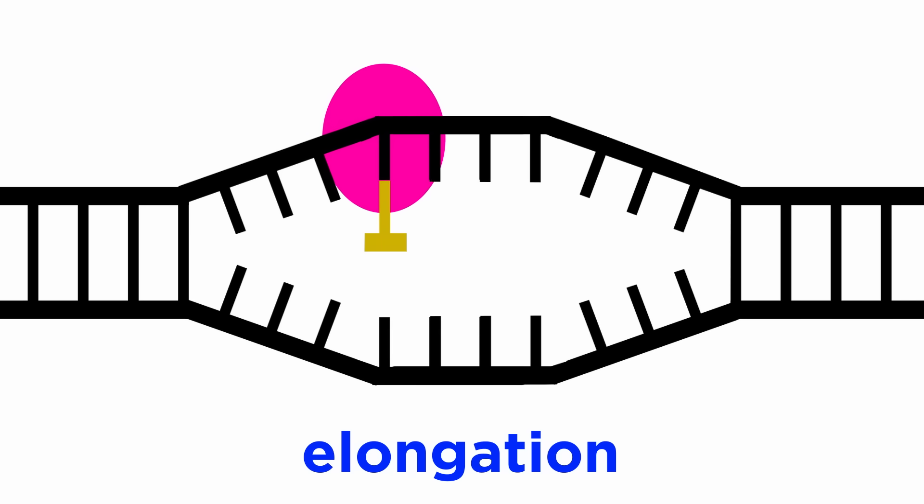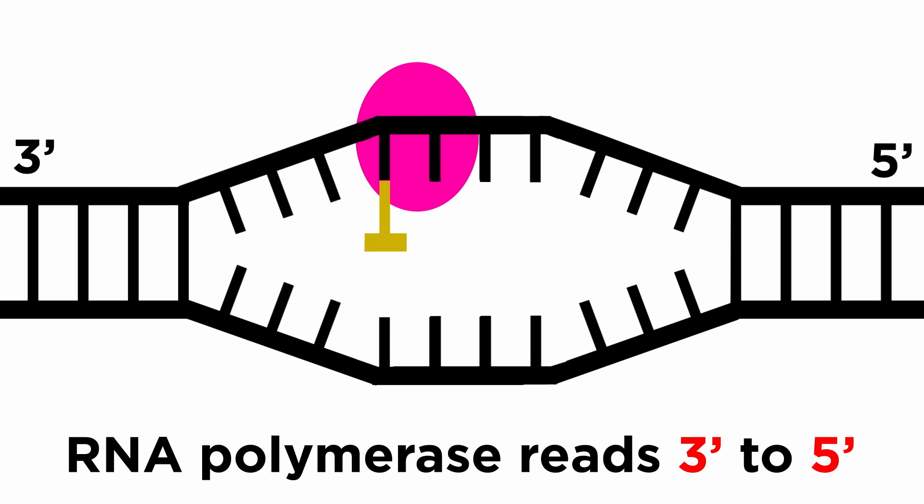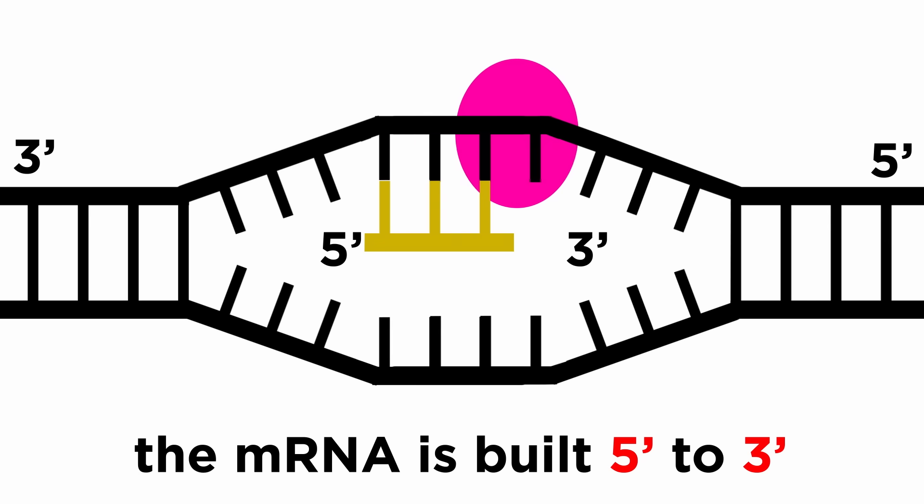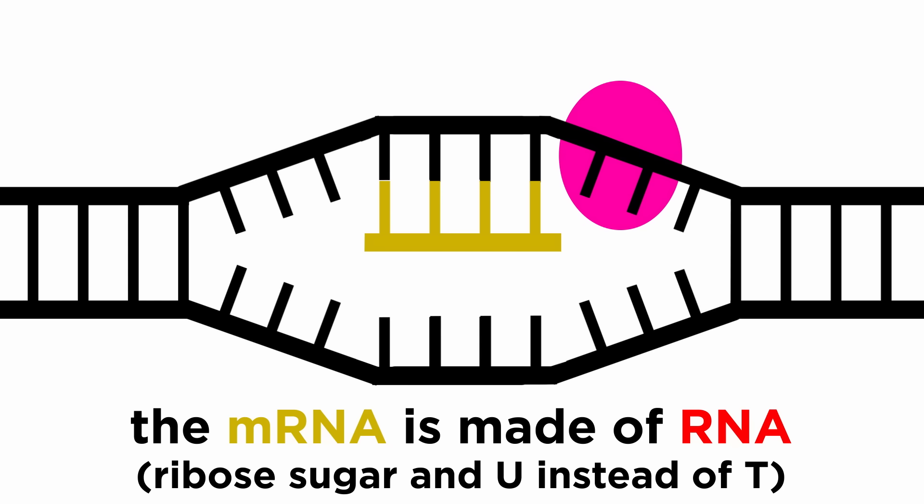Reading the anti-sense strand from three prime to five prime and generating the mRNA from the five prime end, attaching RNA nucleotides to the three prime end as it goes. This is very similar to the way DNA polymerase synthesizes DNA as it moves along the template strand. The main difference here is that RNA is being synthesized, which as we recall will be ribose rather than deoxyribose, and it will have uracil instead of thymine.